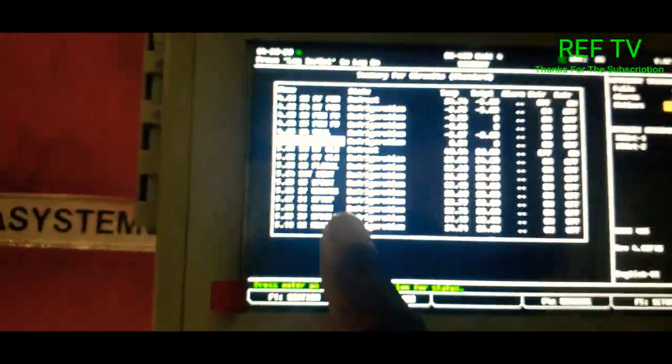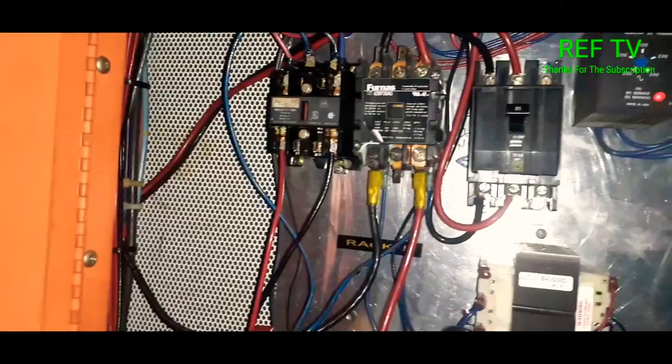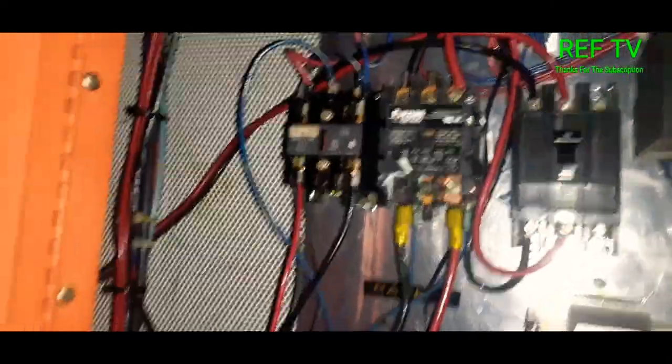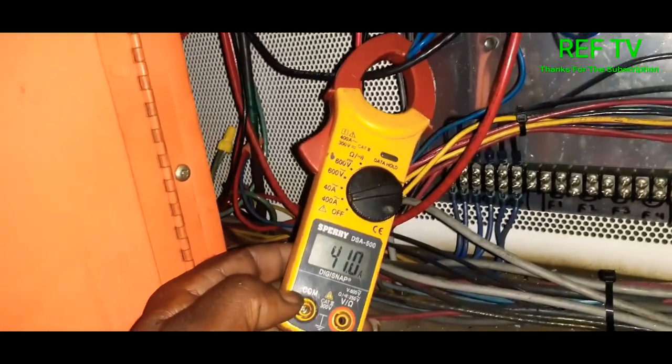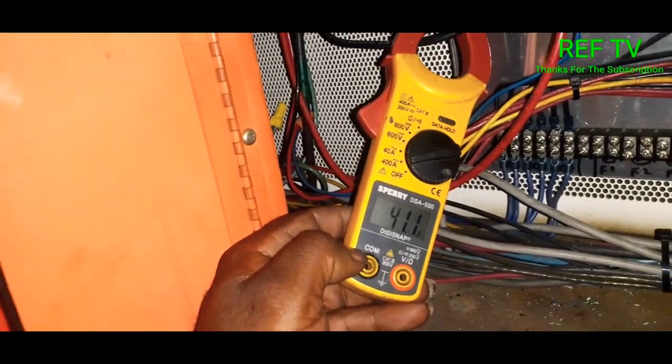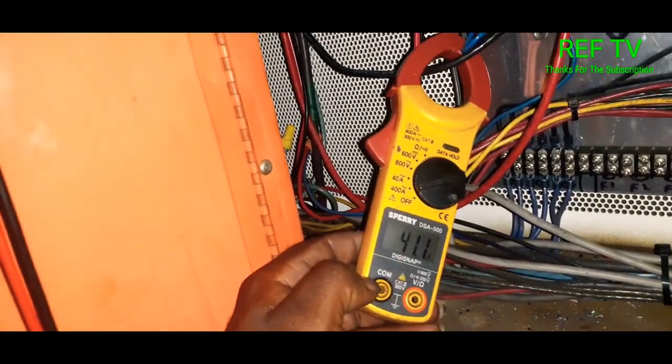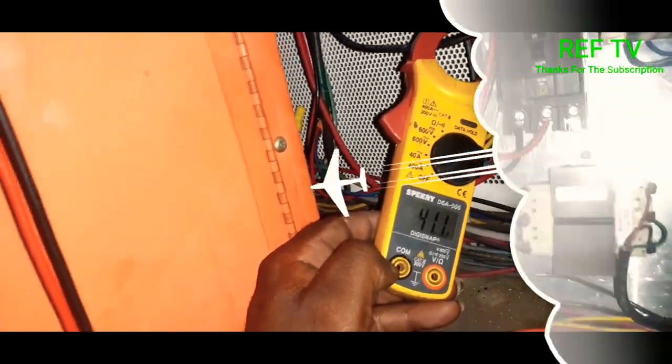All right, so we're back over here at our contactor. As you can see, our contactor is pulled in and we are drawing 40 amps. So our heaters are now working in our case. I'm gonna just let this thing go through and defrost. The heater wire is charged up here at the contactor from the connection.